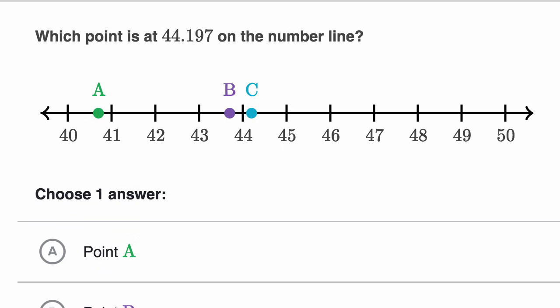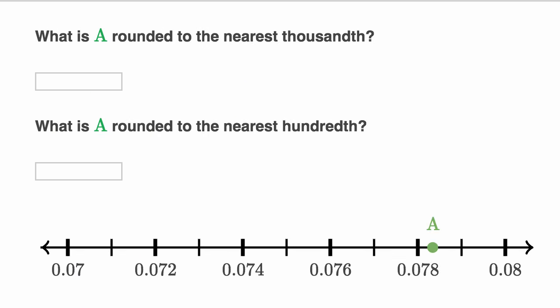Let's do another example. Let's say that we want to, so they say, what is A rounded to the nearest thousandth? What is A rounded to the nearest hundredth? So A is right over here, let's get our bearings. So 0.7, that's seven hundredths. This is eight hundredths right over here.